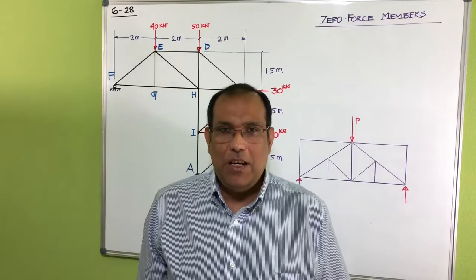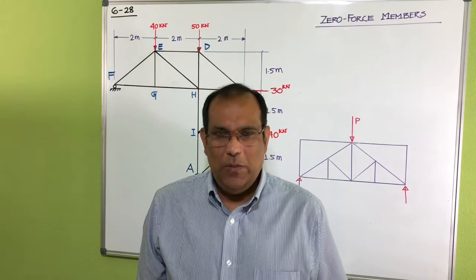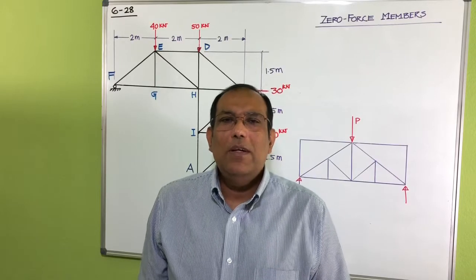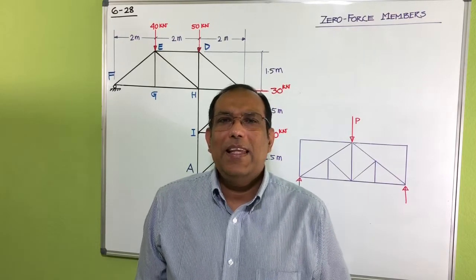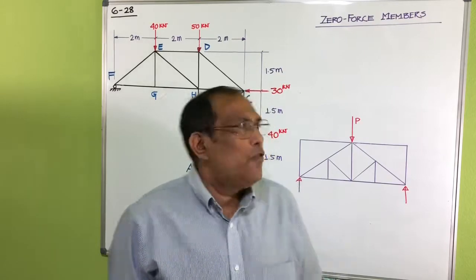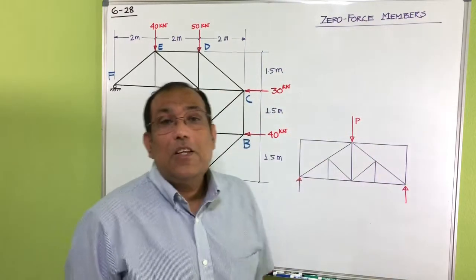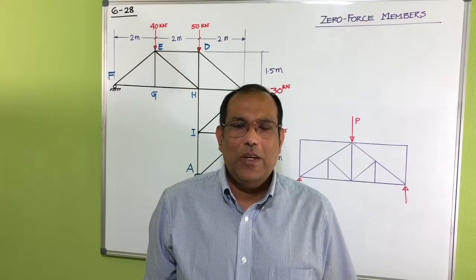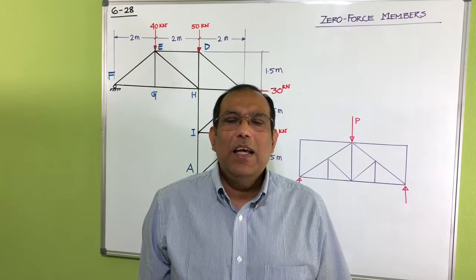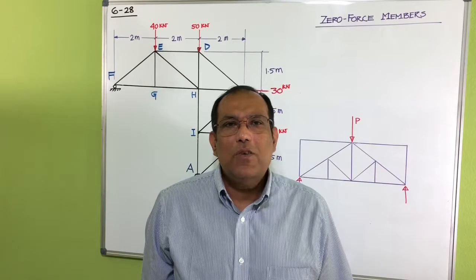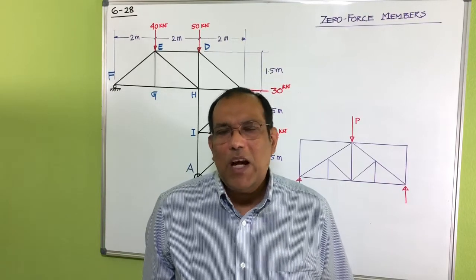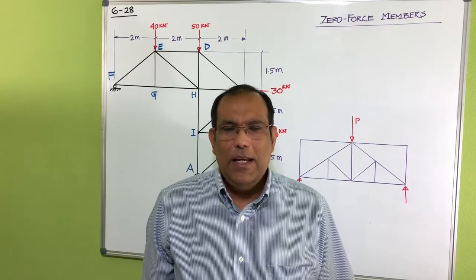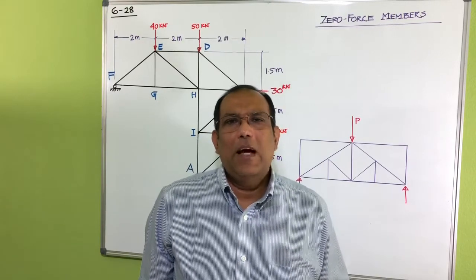For the section method, we assume that if the truss is in equilibrium, then any section of that truss is also in equilibrium. Before the example, let me discuss zero force members. A zero force member means the member doesn't carry any force. You might ask: if it has no force, why keep it? We usually keep it for future use.